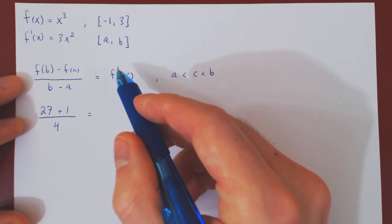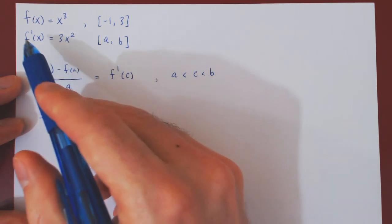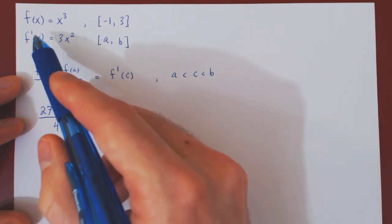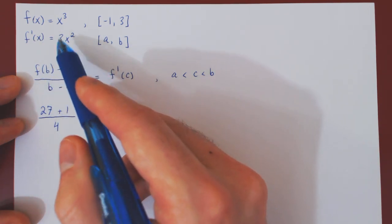Therefore, this equals the derivative at c. Well, f prime of x is 3x squared, so f prime of c, replacing x by c, will be 3c squared.